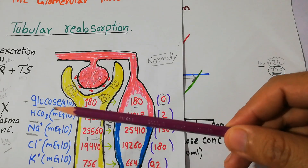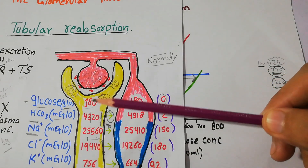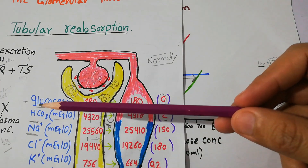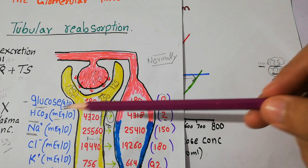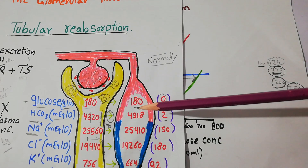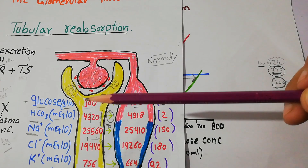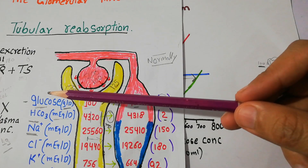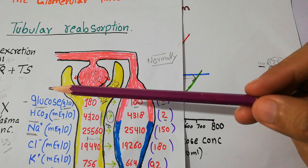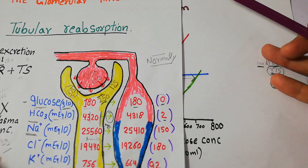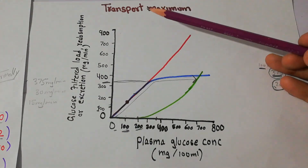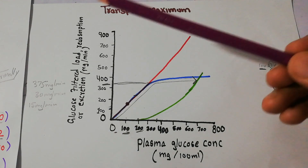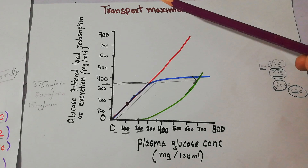When sodium and glucose fell in love with each other in the proximal tubule of nephrons, sodium started helping glucose and transporting it from the proximal tubule into the blood through ride sharing. But after a certain limit, sodium can no longer offer the ride sharing to glucose because of the limitation of the ride. That limit after which glucose cannot be reabsorbed from the proximal tubule into the blood is known as transport maximum.